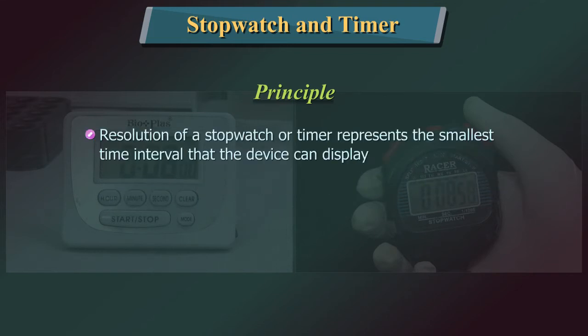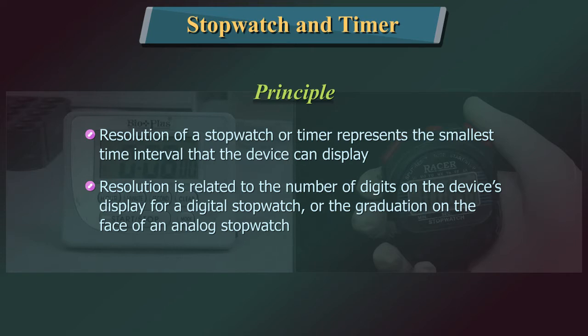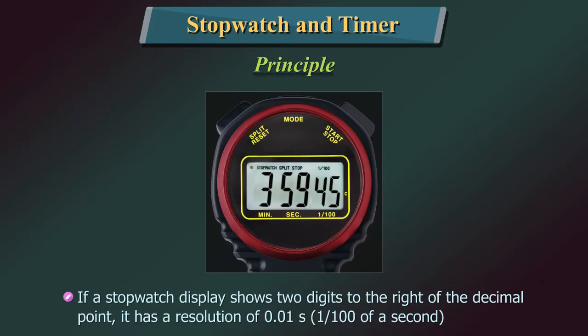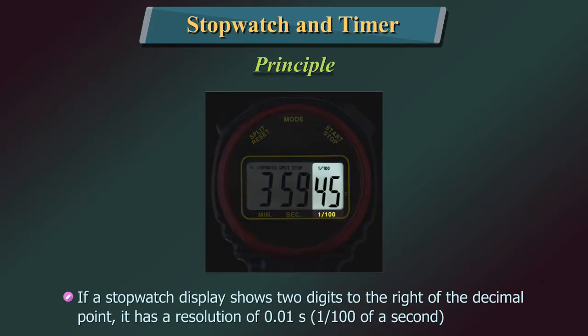The resolution of a stopwatch or timer represents the smallest time interval that the device can display. Resolution is related to the number of digits on the device's display for a digital stopwatch, or the graduation on the face of an analog stopwatch. For example, if a stopwatch display shows two digits to the right of the decimal point, it has a resolution of 0.01 seconds — that is, 1/100th of a second.